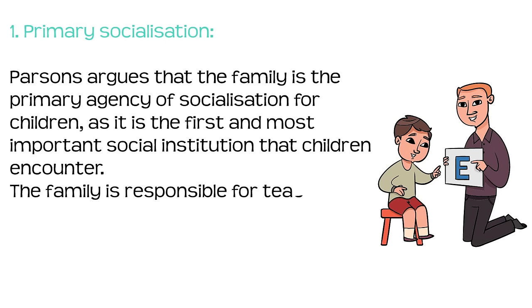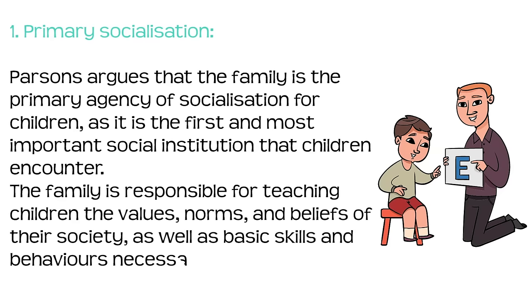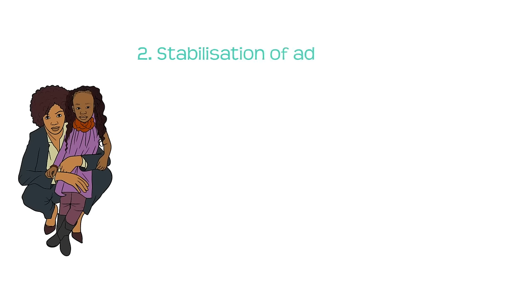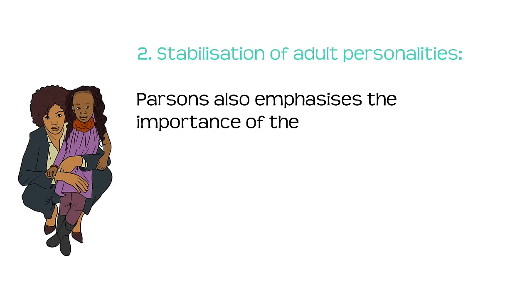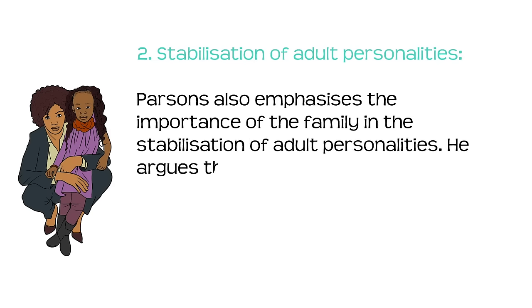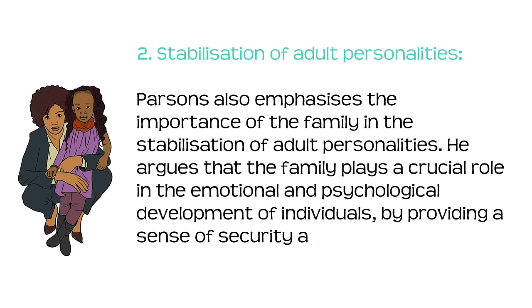The family is responsible for teaching children the values, norms and beliefs of their society, as well as basic skills and behaviours necessary for functioning in society. Secondly: stabilisation of adult personalities. Parsons also emphasises the importance of the family in the stabilisation of adult personalities.